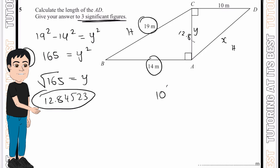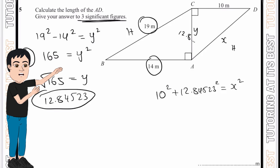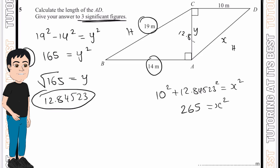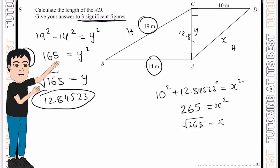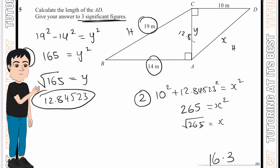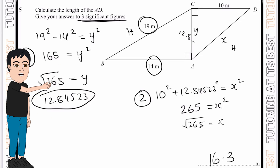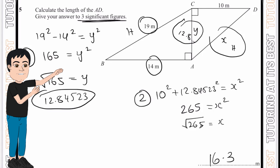Now using y = 12.8 alongside the 10 metres to calculate x: since x is the hypotenuse, 10² + 12.84523² = x². Computing that gives 265 = x², so x = √265 ≈ 16.3. That's our second step and we are done — I've broken this down into two simple steps: first calculating AC, then using that to calculate AD.